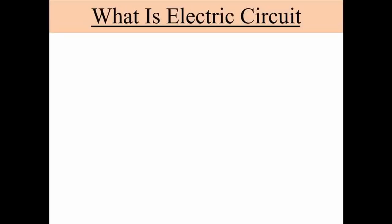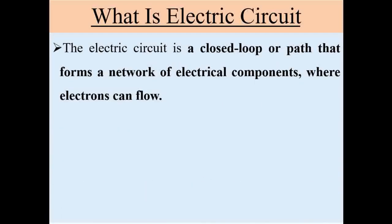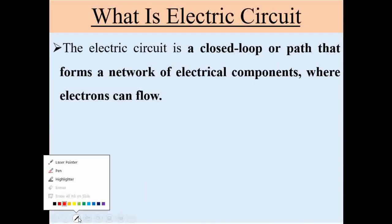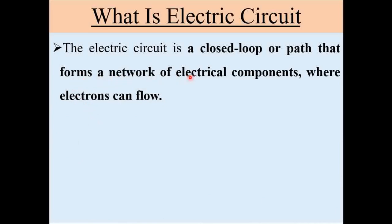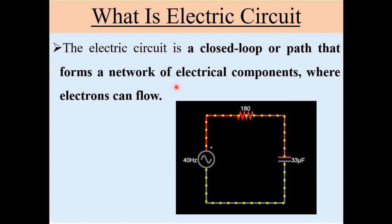The first question: what is an electric circuit? An electric circuit is a closed loop or path that forms a network of electrical components where electrons can flow. In short, an electric circuit is a closed loop containing different electrical components through which electrons can flow. We can understand this with the help of a basic diagram.